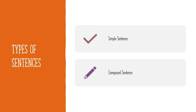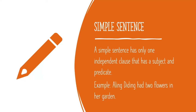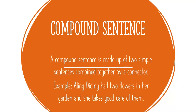Let us recall our past lesson on Simple Sentences and Compound Sentences. A simple sentence has only one independent clause that has a subject and a predicate. Example: Aling Diding had two flowers in her garden. On the other hand, a compound sentence is made up of two simple sentences combined together by a connector. For example: Aling Diding had two flowers in her garden, and she takes good care of them.